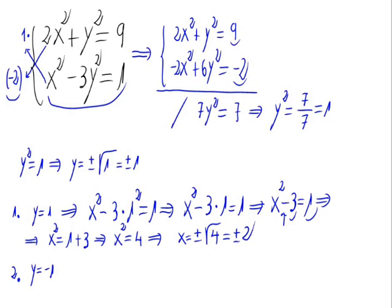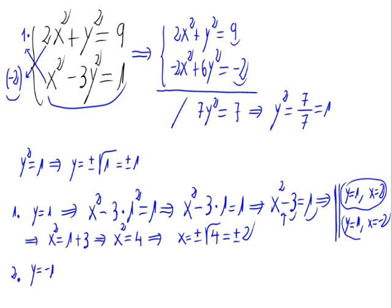Again, we have two solutions for x: plus 2 and minus 2. So for y equal to 1, x can be equal to 2 or x can be equal to minus 2 — two different solutions for the same value of y.